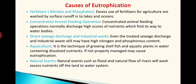The next cause is concentrated animal feeding operations. Nowadays aquaculture is very common, and concentrated animal feeding operations normally discharge the highest amount of nutrients which find their way to the water body — whatever is fed in excess directly reaches the water bodies. Direct sewage discharge and industrial waste: if sewage and industrial waste are directly discharged into water bodies, along with that a lot of nutrients can reach the water bodies. Even treated sewage still may have higher nitrogen concentration — we don't have technologies to remove these things in dissolved form, as nitrogen and phosphorus are very difficult to treat out.